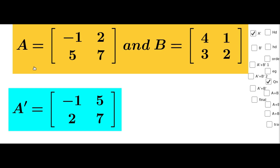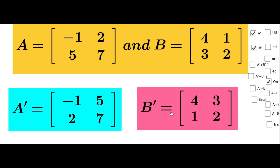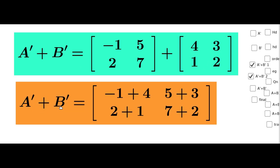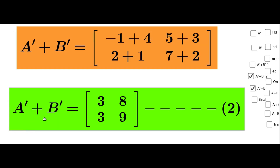Now find Aᵀ. Here A equals minus 1, 2, 5, 7, so Aᵀ equals minus 1, 5, 2, 7. And Bᵀ equals matrix 4, 3, 1, 2. Then Aᵀ plus Bᵀ equals matrix minus 1, 5, 2, 7 plus matrix 4, 3, 1, 2. Adding element-wise: minus 1 plus 4, 5 plus 3, 2 plus 1, 7 plus 2. That is Aᵀ plus Bᵀ equals matrix 3, 8, 3, 9.